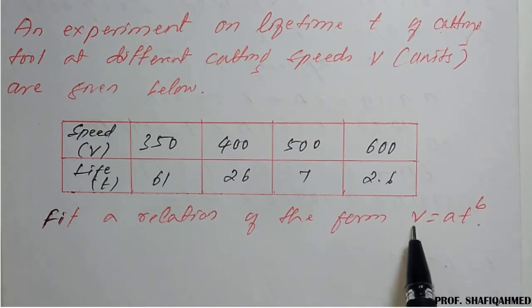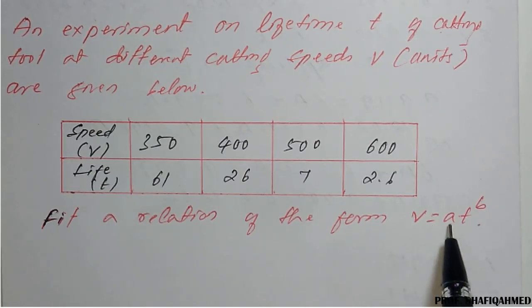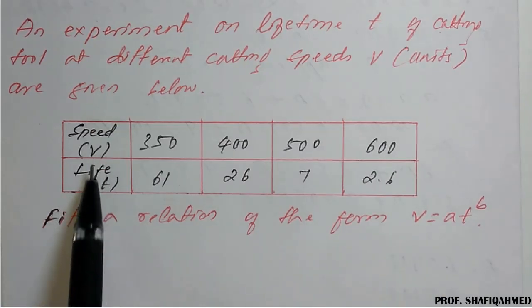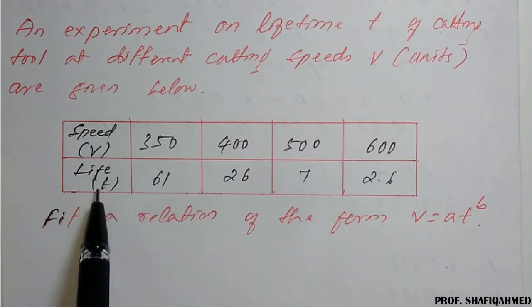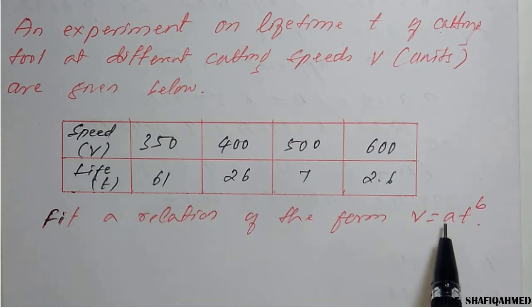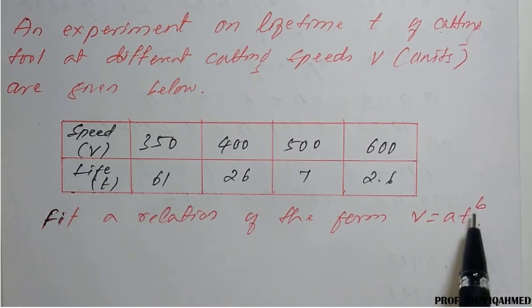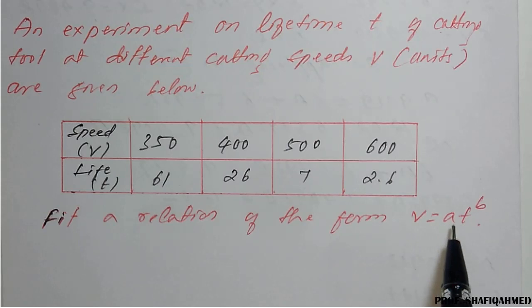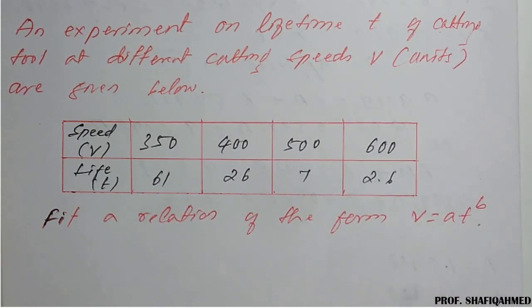This is equivalent to the standard power-law form Y = A · X^B. Here, V is the dependent variable and T is the independent variable. The given curve is V = A · T^B, which is equation 1.